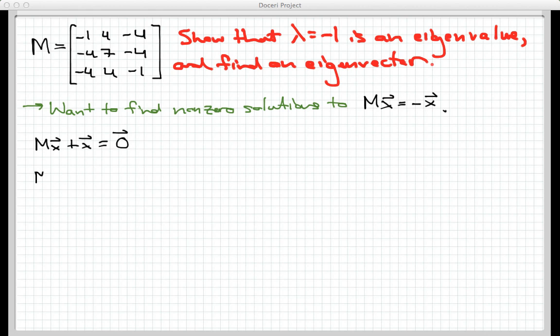And this is the same as M⃗x plus the identity matrix times ⃗x is the zero vector, and now I can factor out this vector factor of ⃗x and get the following. So I'm trying to find non-zero solutions to this homogeneous equation right here.